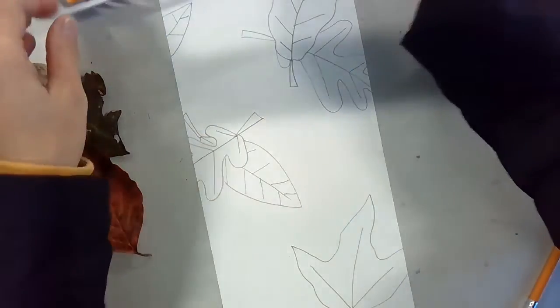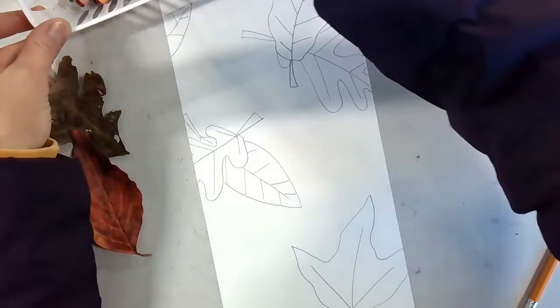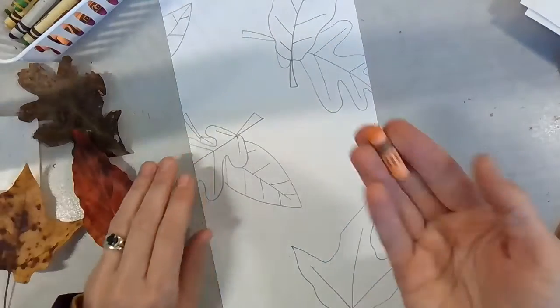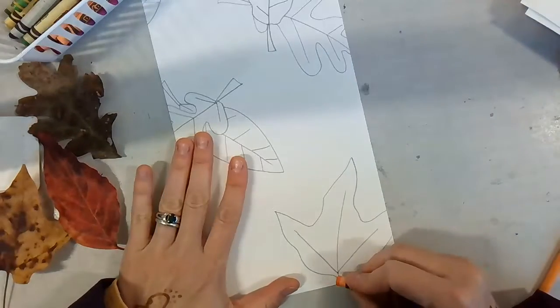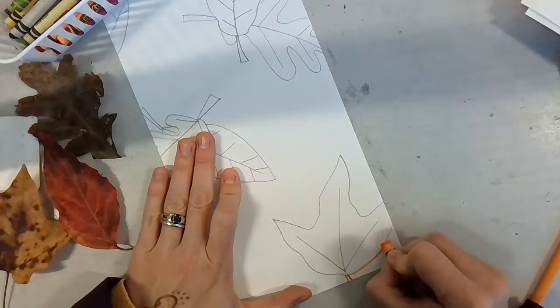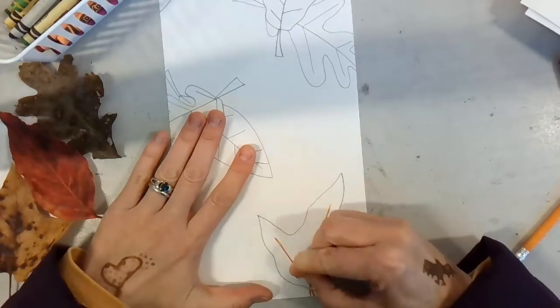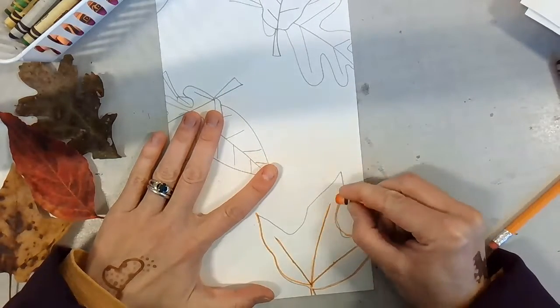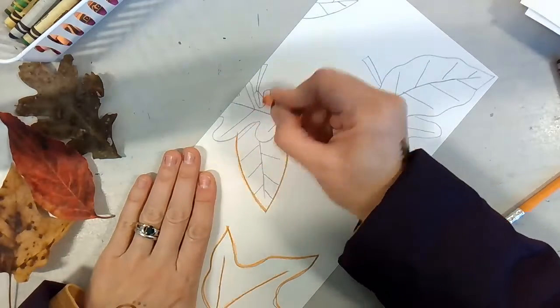All right. Once your composition is done, you can pick a crayon color—any color, doesn't matter. I'm going to do orange and trace over your pencil. We are preparing this paper for painting next time.